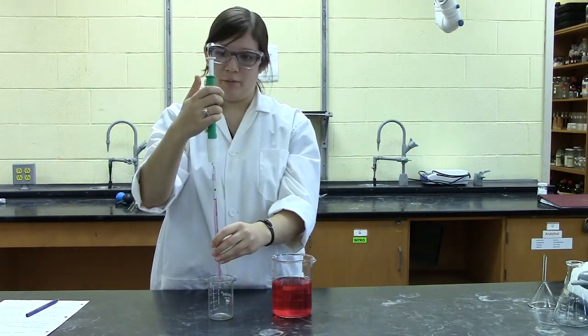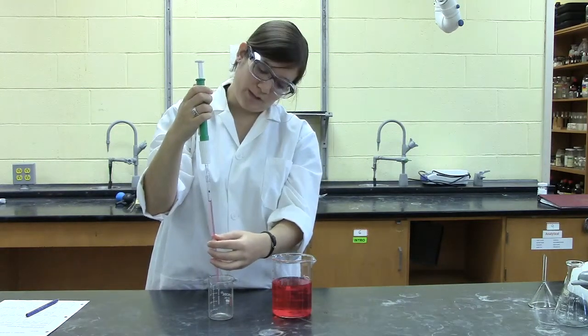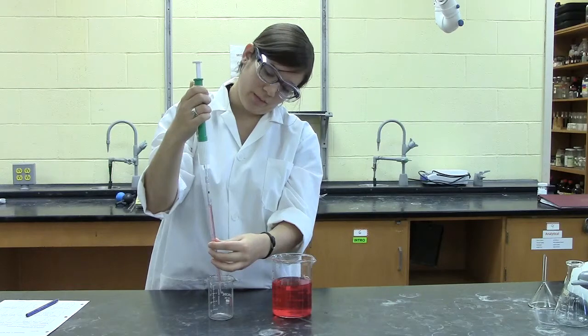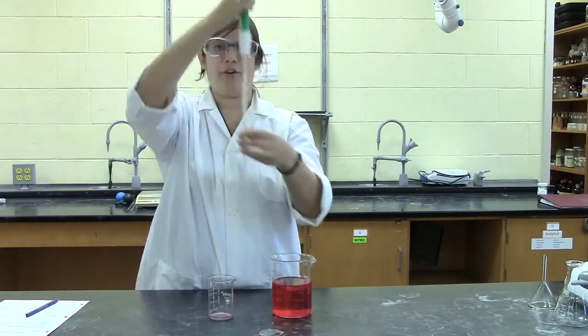Once you have it leveled to the zero mark, if you want to add, say, two milliliters, you can just use the wheel in the opposite direction to lower the meniscus down to the two milliliter mark. And that's your correct volume.